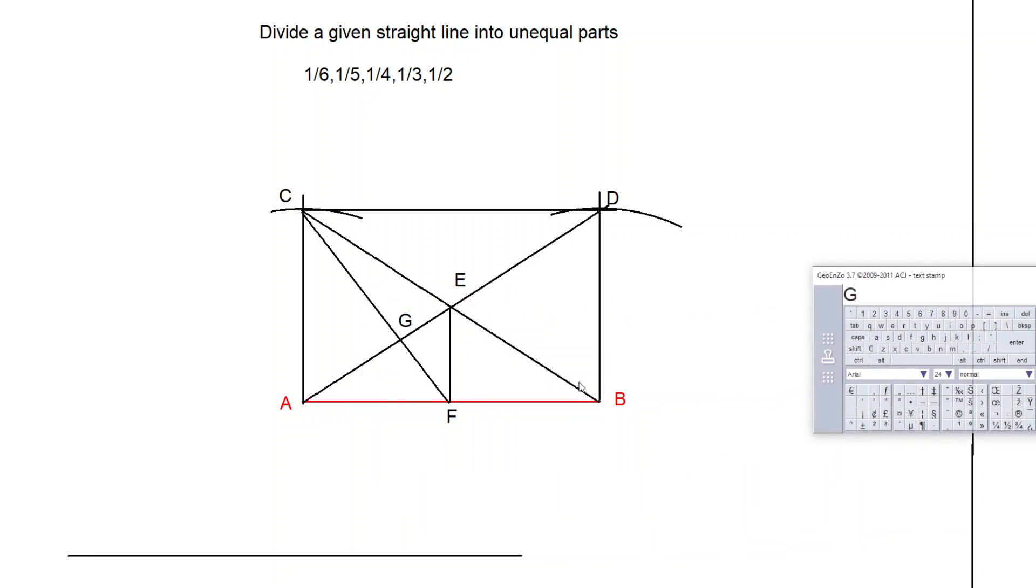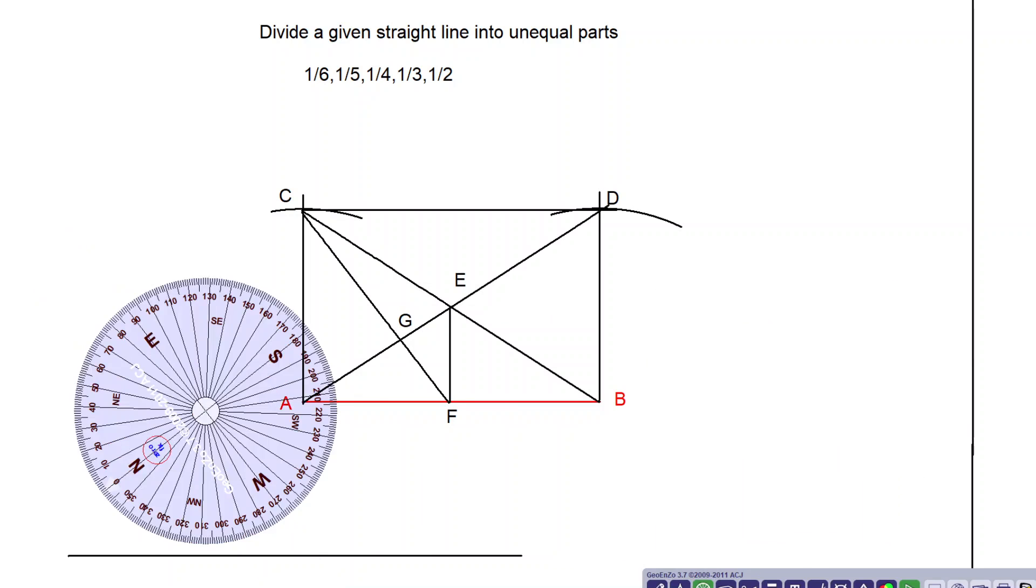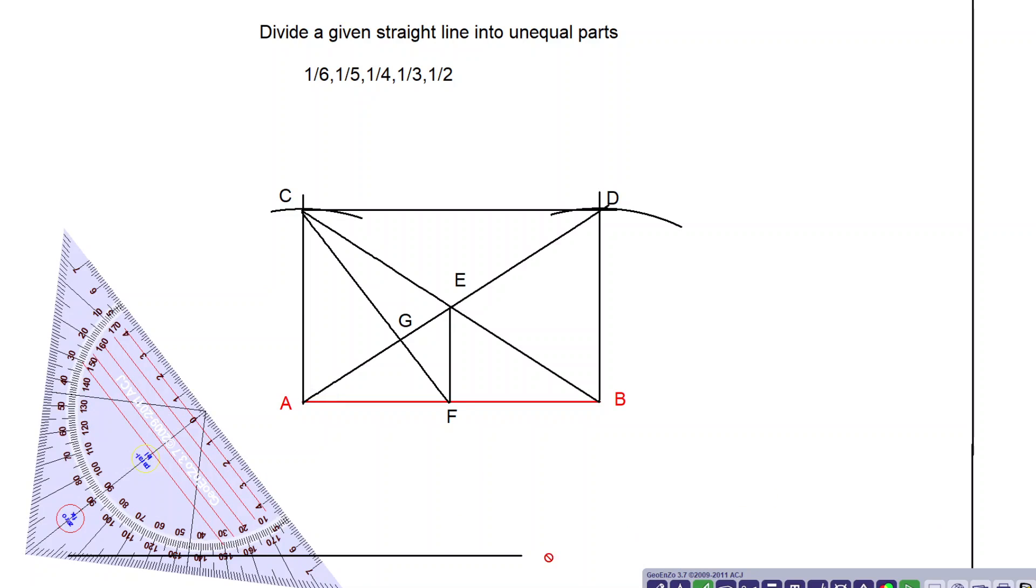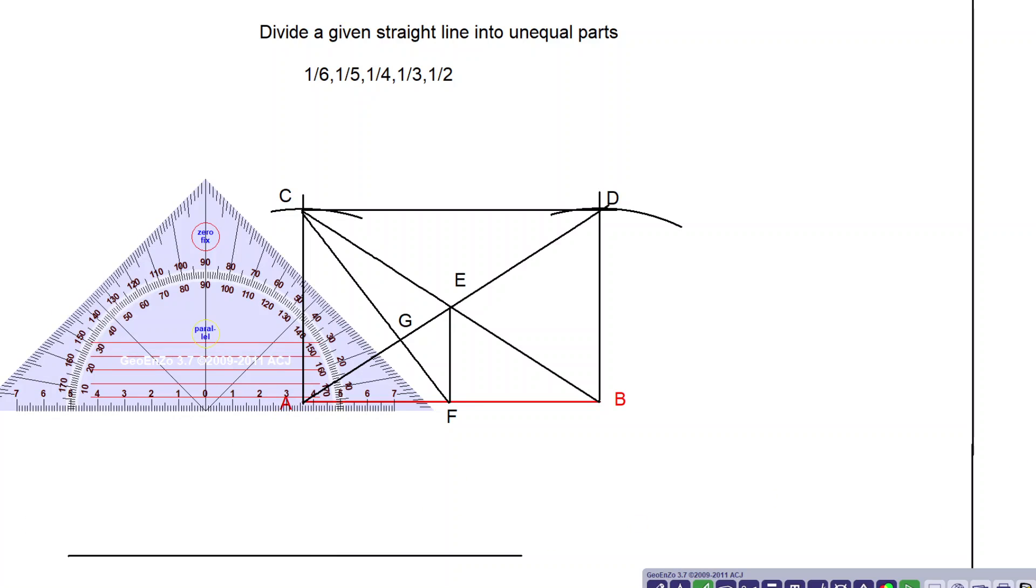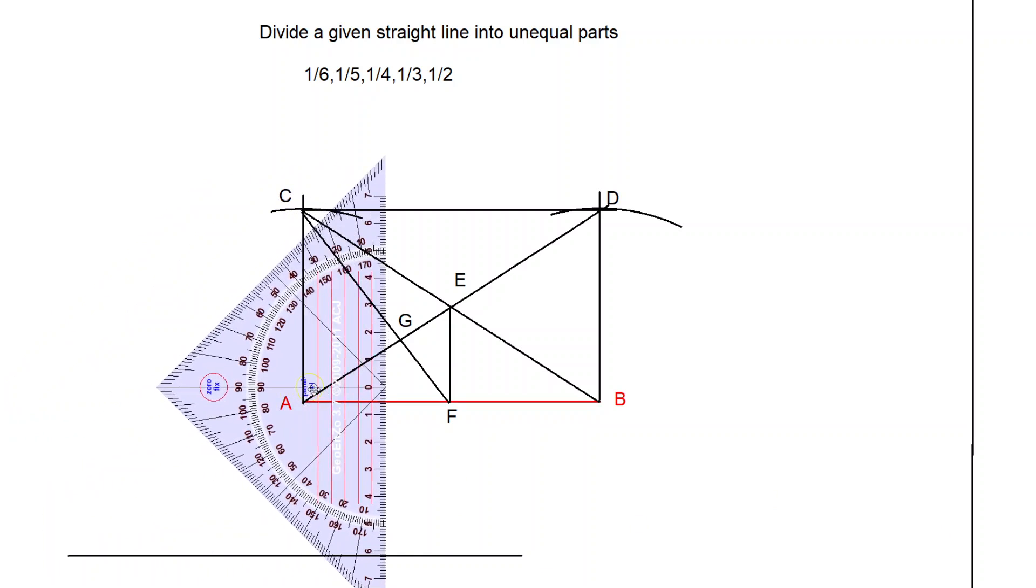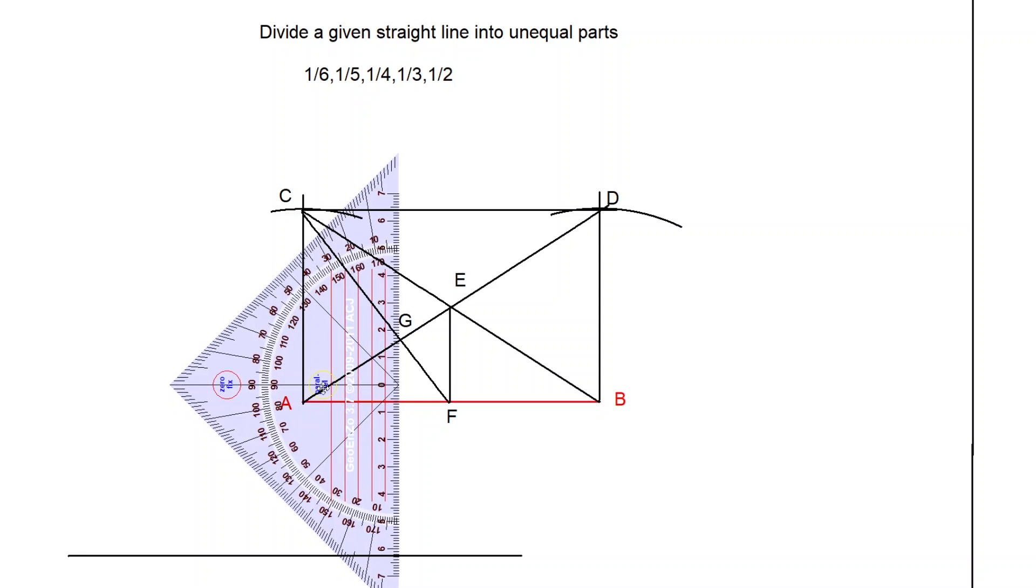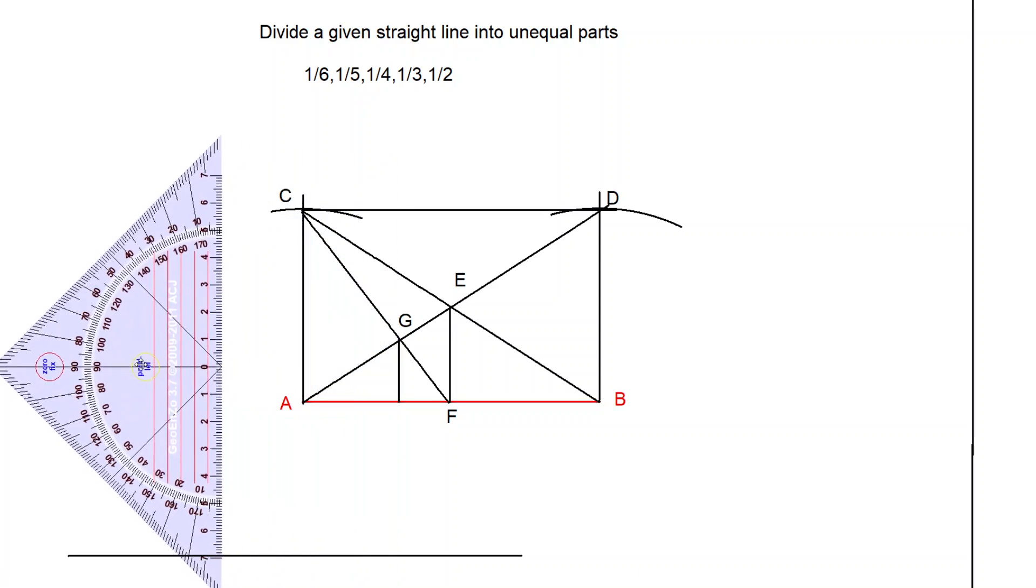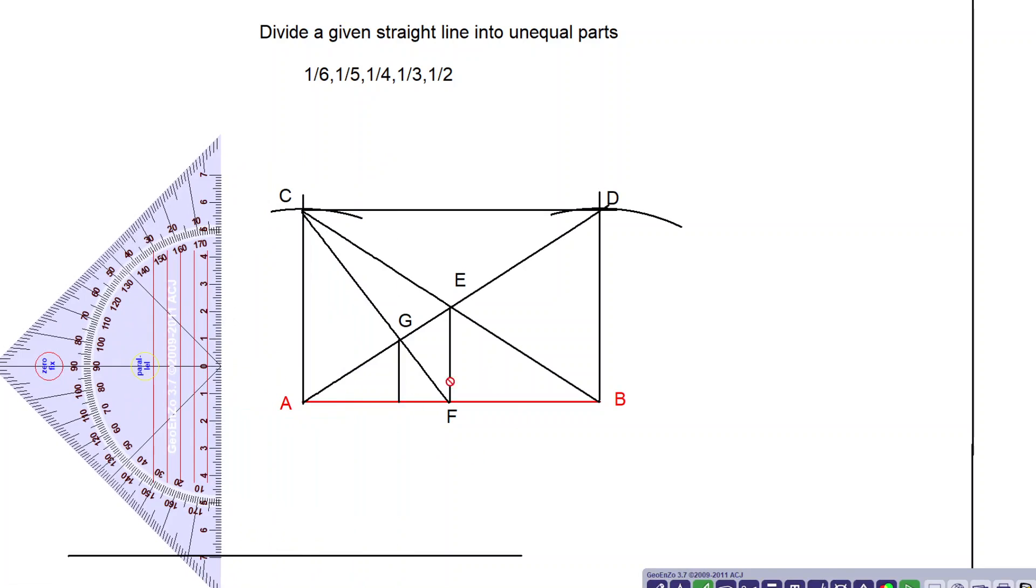Now draw a perpendicular from G to line AB. From here I will draw a perpendicular. Now you can use your compass or you can use the set square also to do that. You can use exactly the same parallel line.